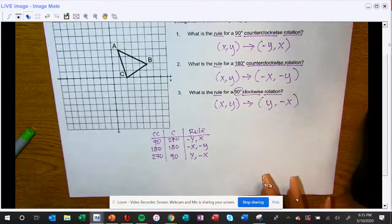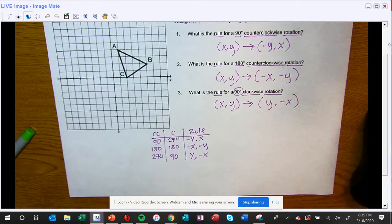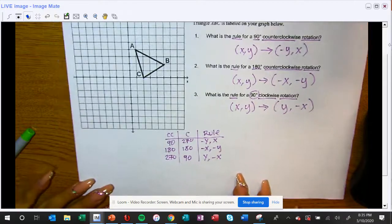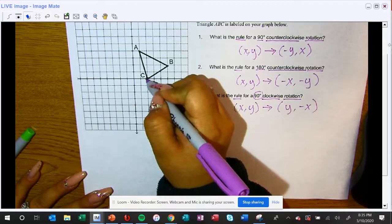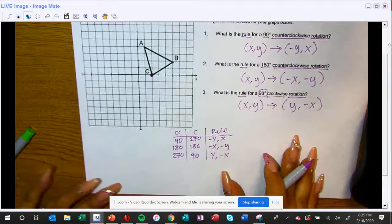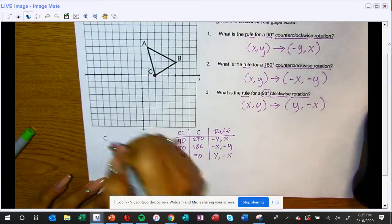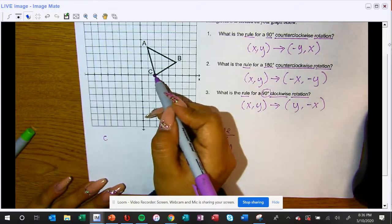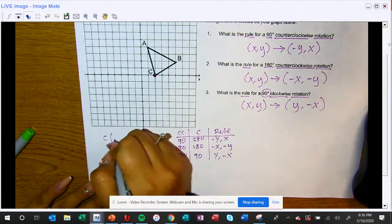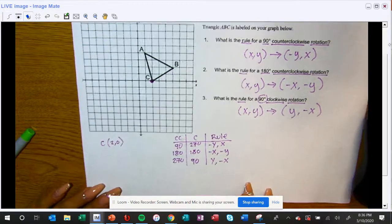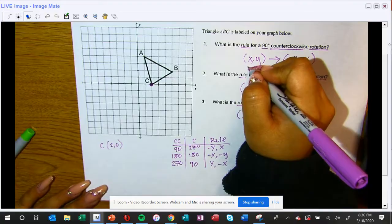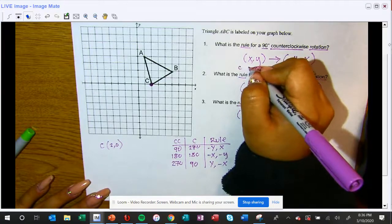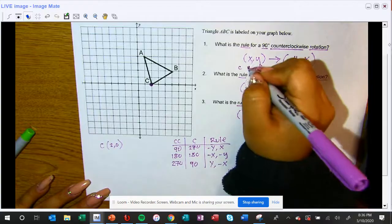Now later on if they ask you, for example, to rotate one of these points, I am going to do it using point C. So point C is currently at two comma zero.